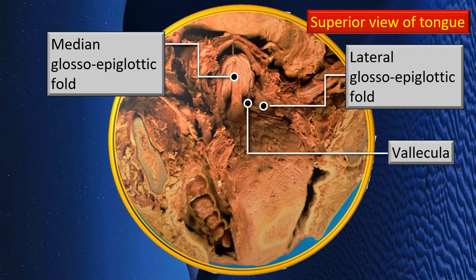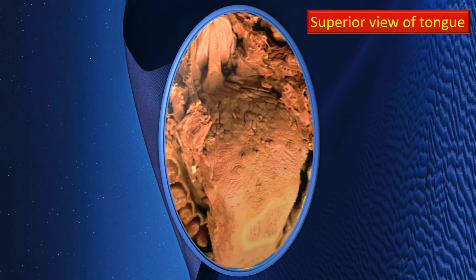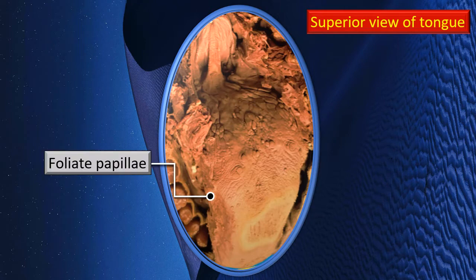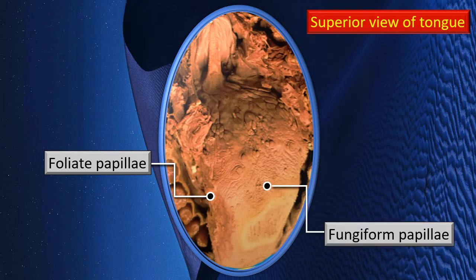In a close-up view of the superior surface, at the lateral border are columns of ridged mucous membrane — the foliate papillae, quite large and very prominent. The rest of the anterior two-thirds, excluding the circumvallate papillae area, is covered by small club-shaped protrusions called fungiform papillae.